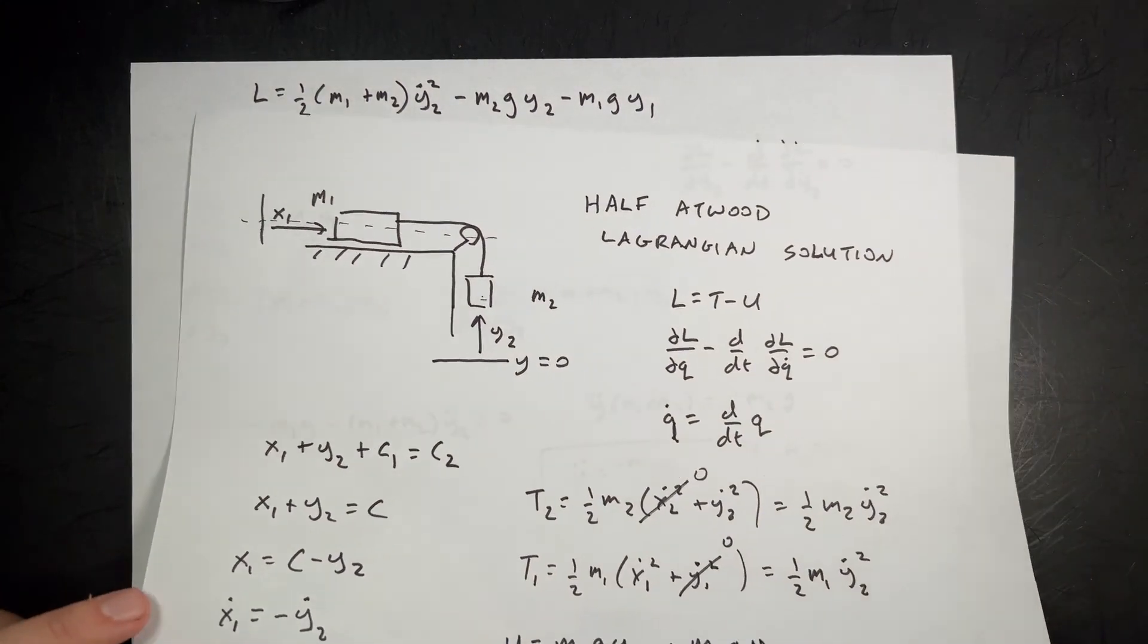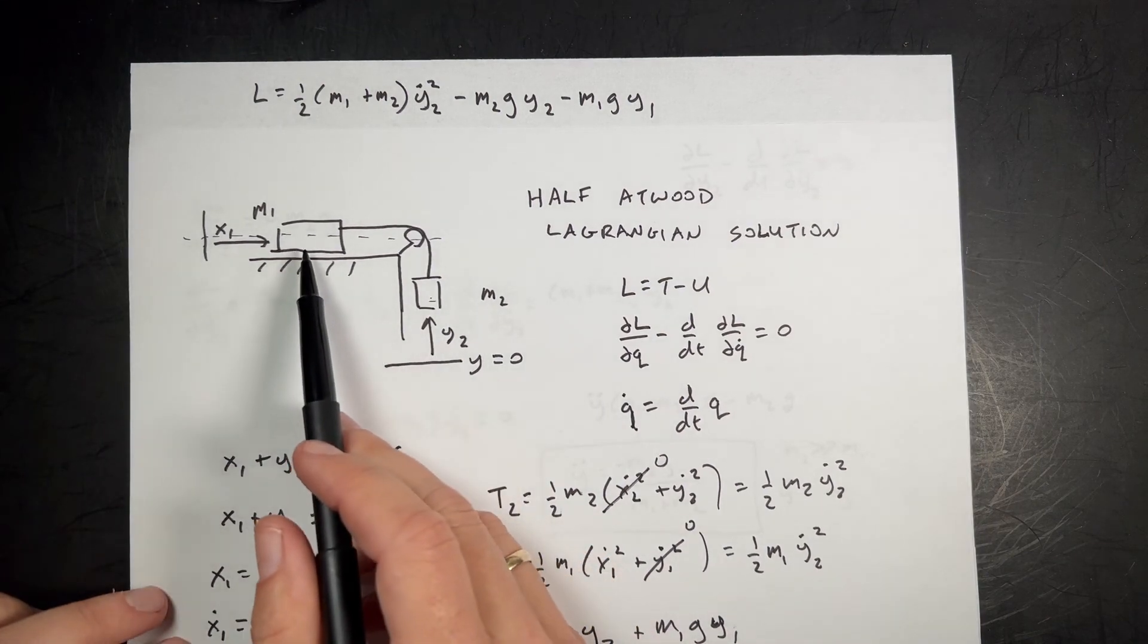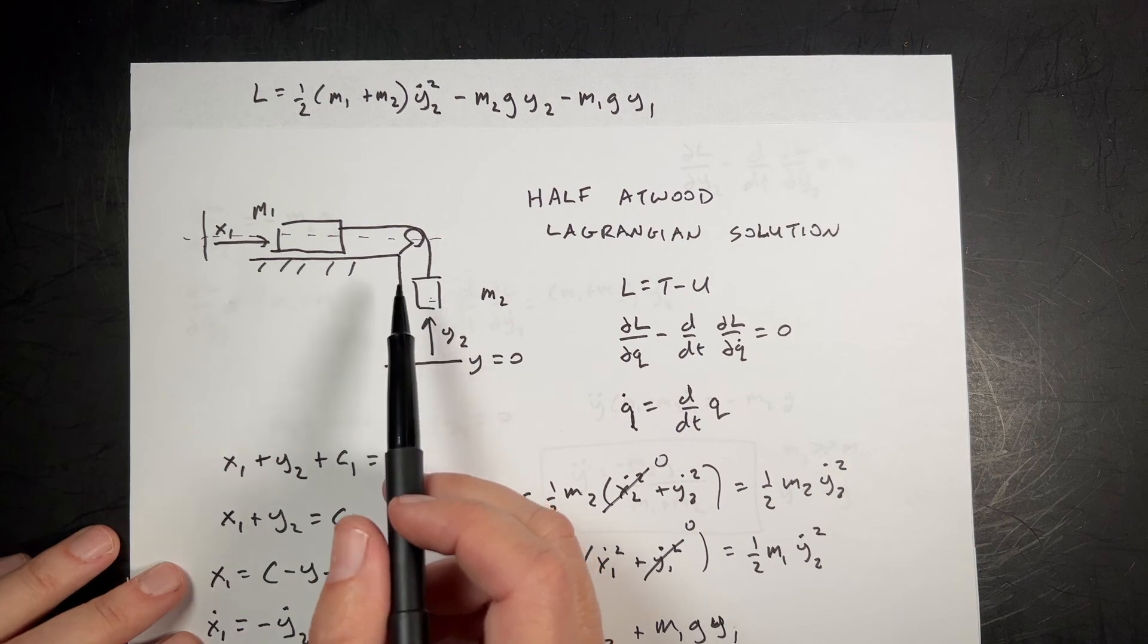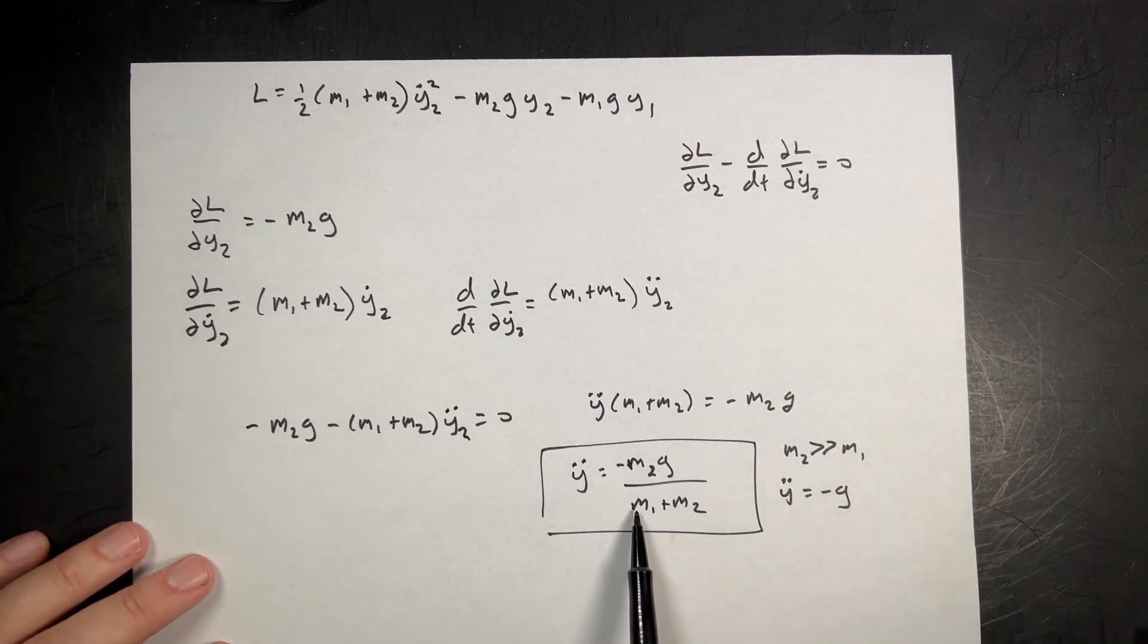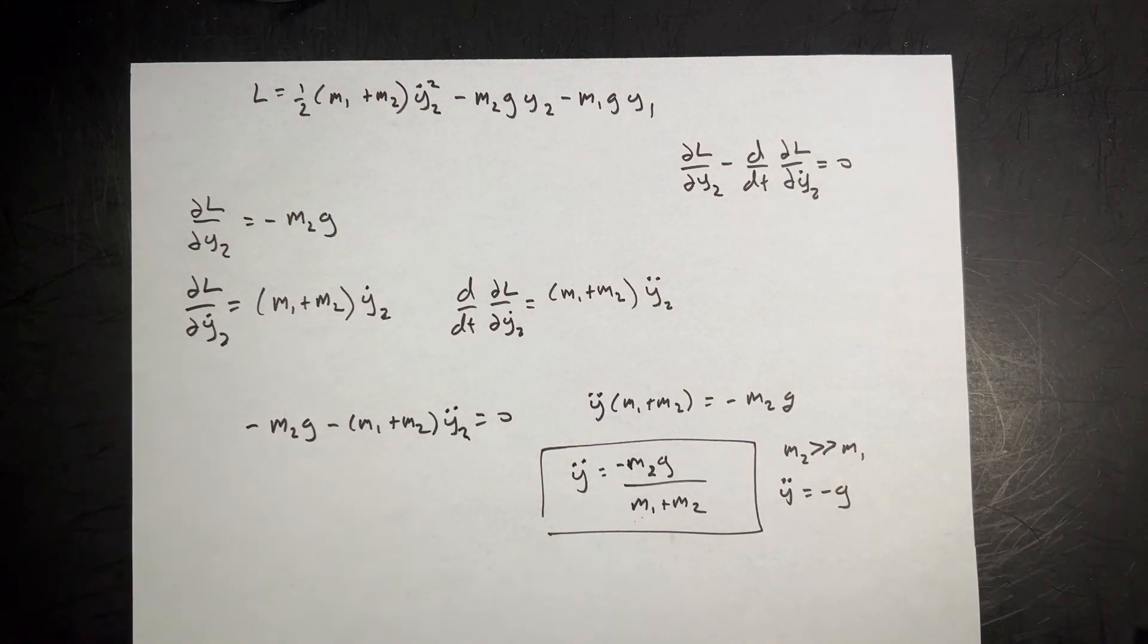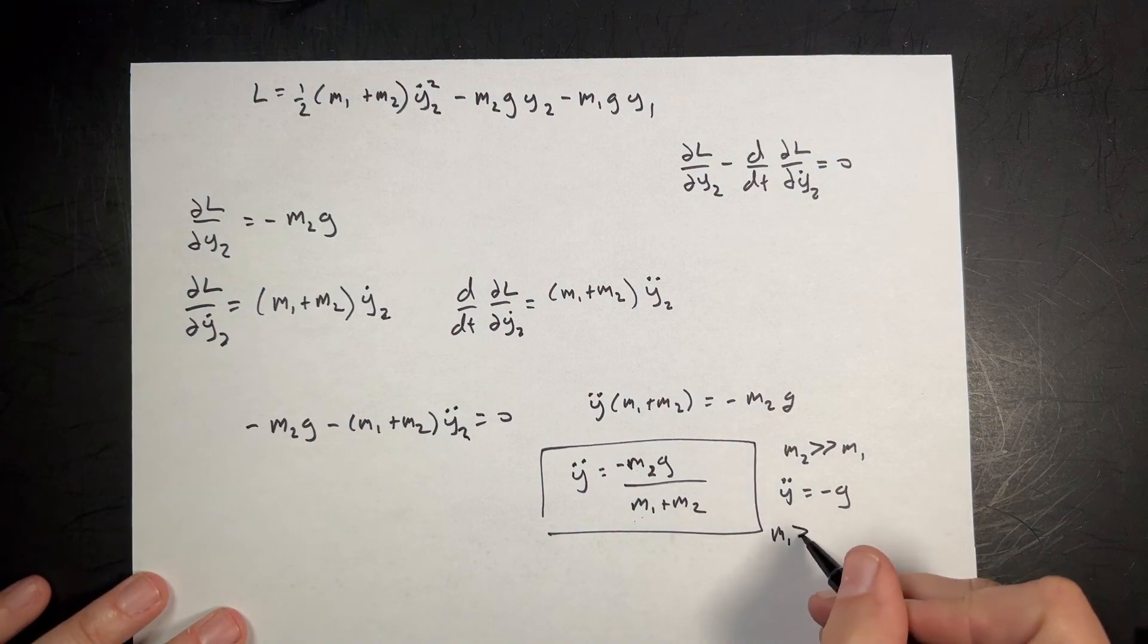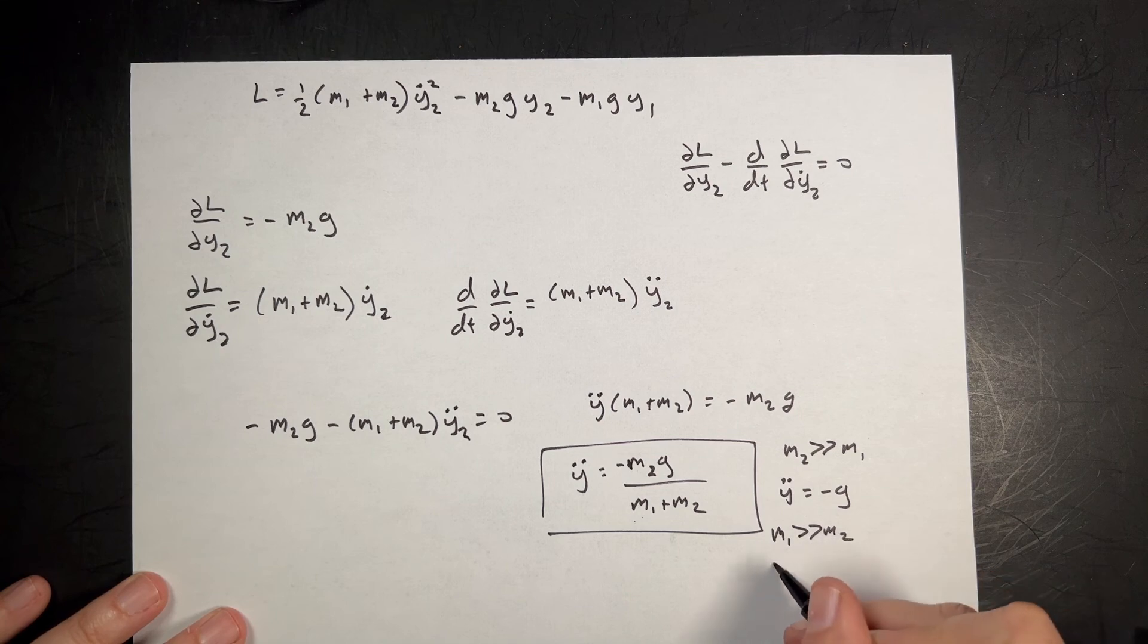What about the case where m1 is very large? If this is super large compared to that, it shouldn't accelerate. It won't move at all. So if I put a very large value for m1, y double dot is very close to zero. For m1 much greater than m2, y double dot is approximately zero.